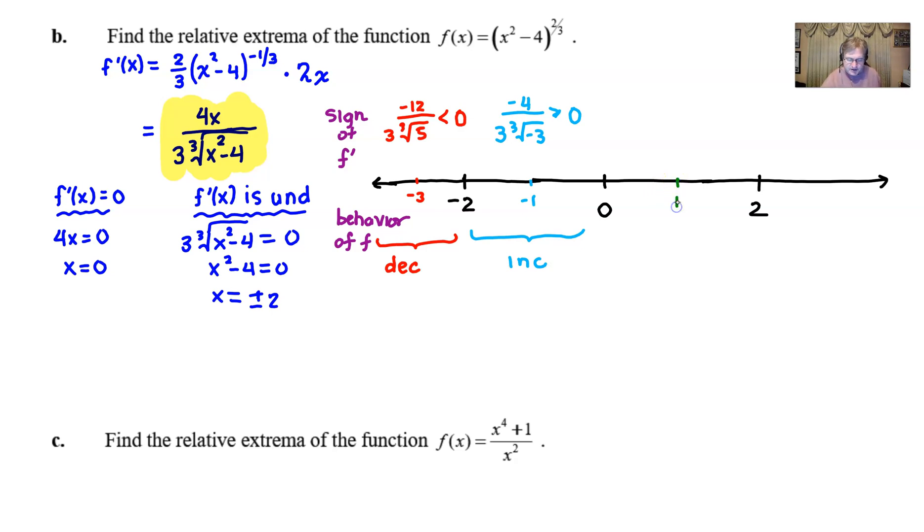Between 0 and 2, we're going to try 1. We plug 1 into the top, we get positive 4. The bottom is 3 times the cube root of -3. All of this is going to be a negative result, so this is decreasing. And last but not least, we'll try positive 3. That's 12 on the top and 3 times the cube root of 5 in the bottom for a positive, thus increasing.